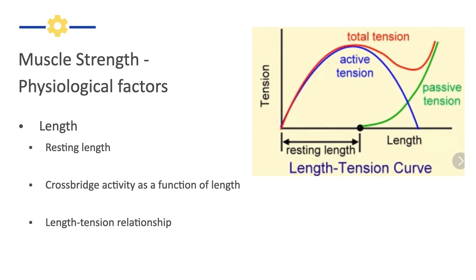There's another part of the muscle that generates tension, and that's the connective tissue component. The connective tissue component is like a rubber band — if you stretch it, it will pull back. At the resting length of a muscle, the connective tissue is not stretched at all, so it doesn't develop any tension. As we start to stretch the muscle longer and longer, this connective tissue, which has elastic fibers within it, starts to develop tension called passive tension, because it's the tension like from a rubber band. As you stretch it further and further, it pulls back harder and harder. So the total tension that a muscle can generate is actually a combination of the active tension and the passive tension.